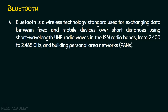Bluetooth is a wireless technology standard used for exchanging data between fixed and mobile devices over short distances, using short wavelength ultra-high frequency radio waves in the ISM radio band from 2.4 GHz to 2.485 GHz. Bluetooth is used for building personal area networks. We have already seen LAN, MAN, and WAN — personal area network is another type. ISM means Industrial, Scientific and Medical frequency bands.